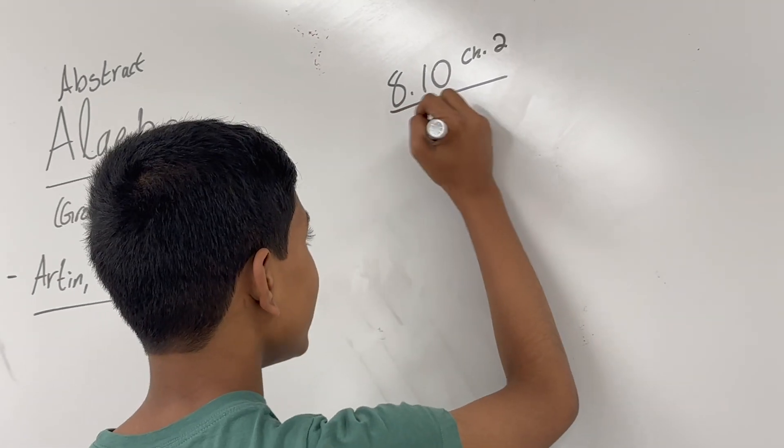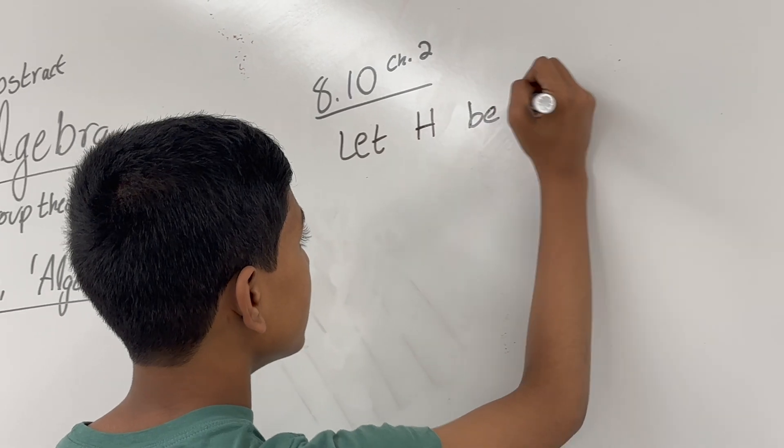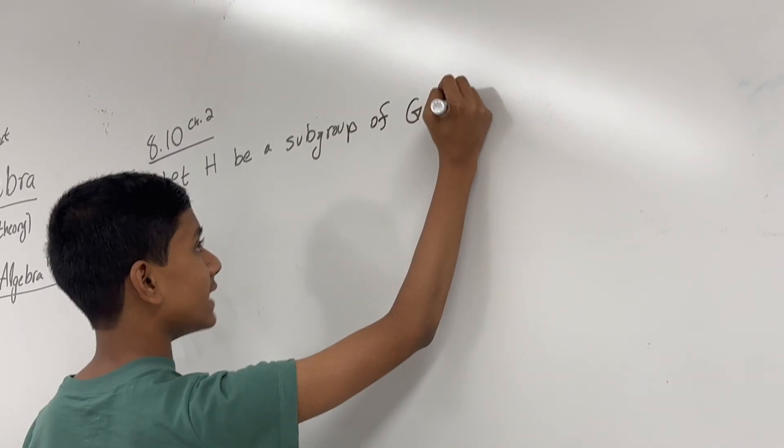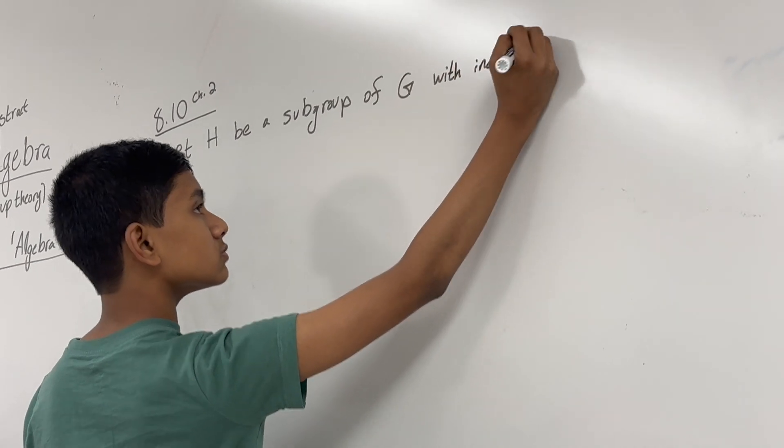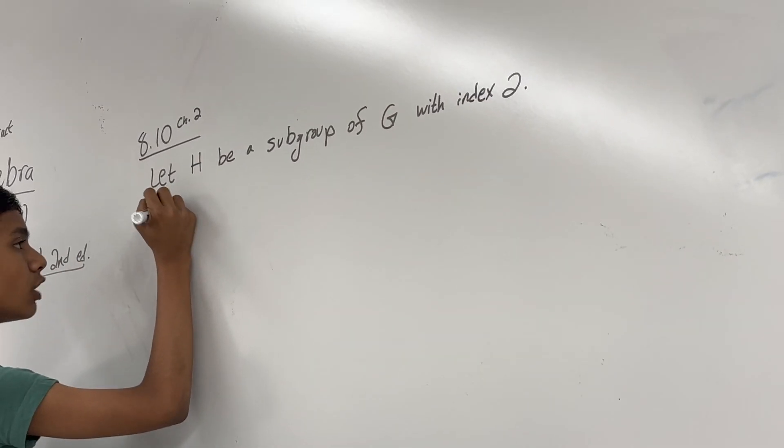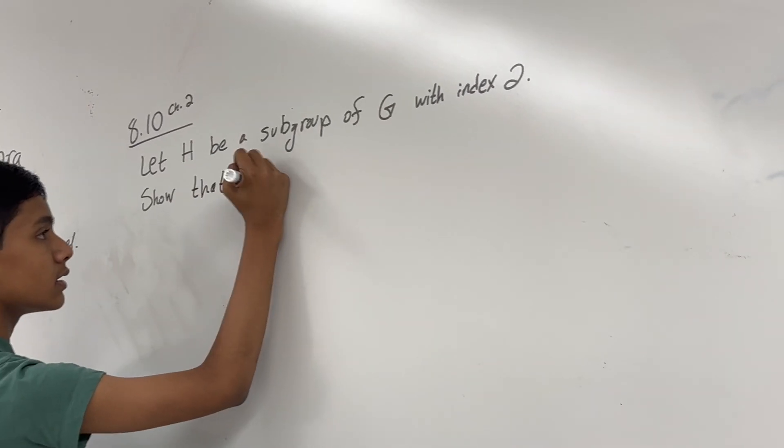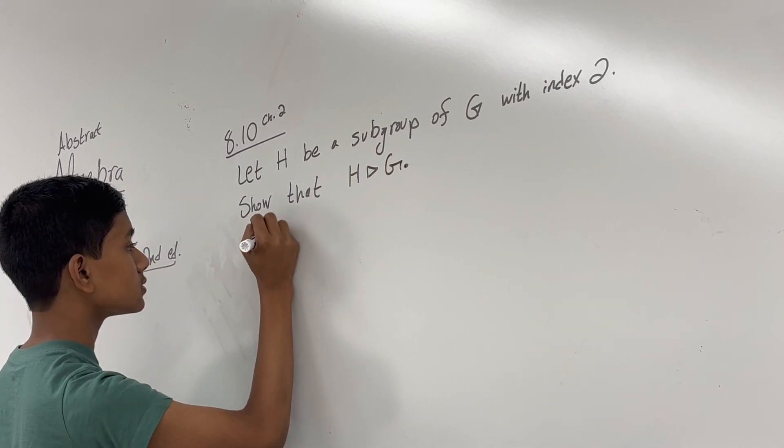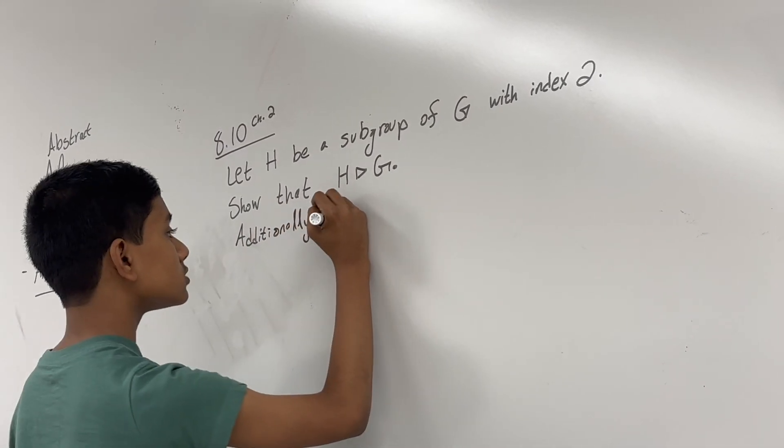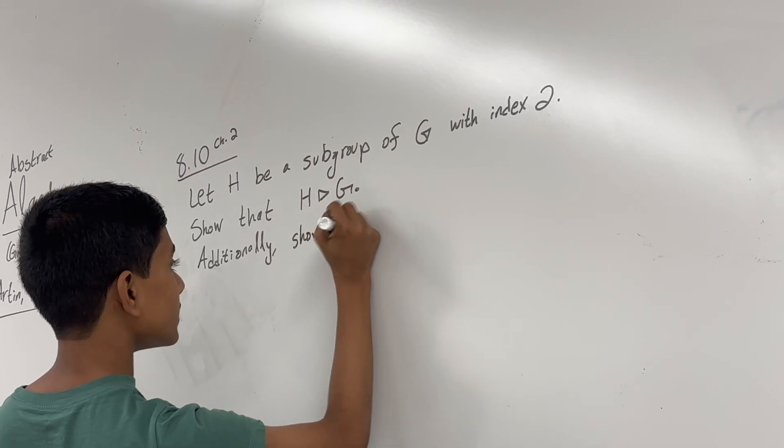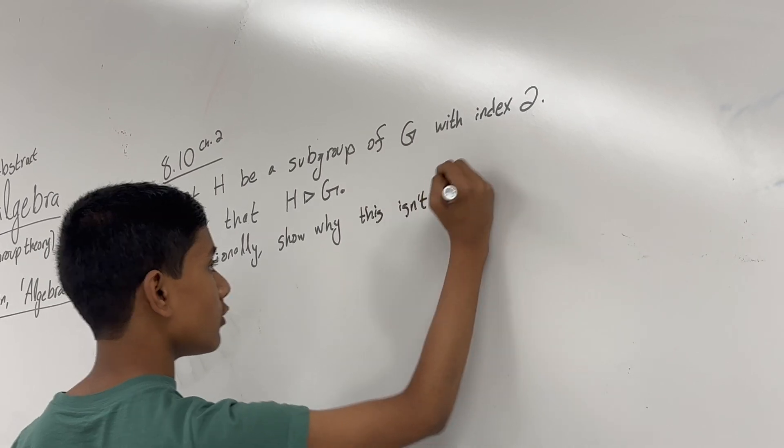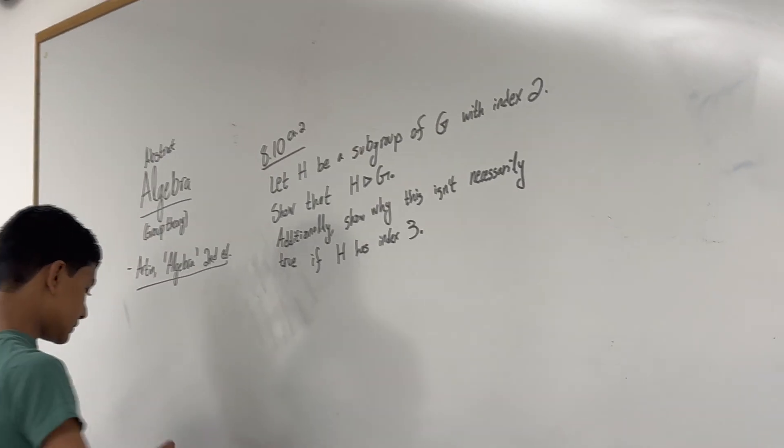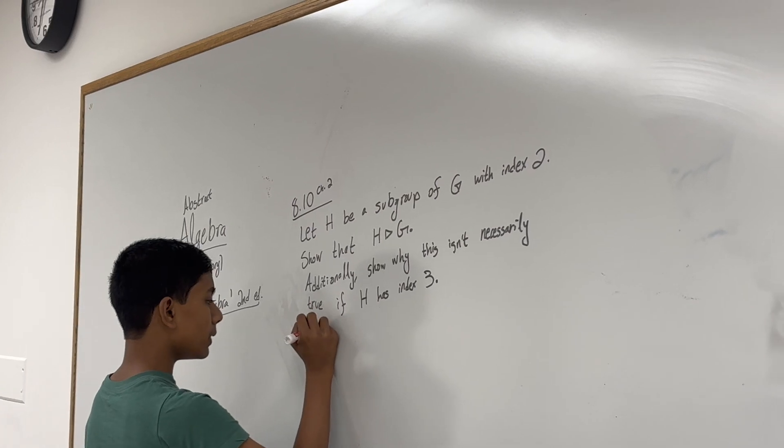This is problem 8.10 in chapter 2 of Artin's book. Let H be a subgroup of G with index 2, so that H must be normal. This isn't the exact wording, but it's the same problem.